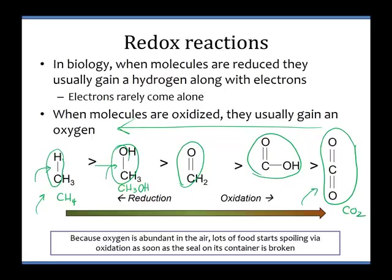Oxygen does oxidation — it'll try and oxidize any molecules it comes into contact with. Iron will give up its electrons quite easily, so oxygen will oxidize iron — that's why iron rusts. The red rust is iron oxide. This is also what happens when food spoils, especially when oil goes rancid. If you open a bottle of oil, shove it in the back of your pantry, and find it months later smelling nasty — that's because it's oxidized as a result of coming into contact with oxygen.